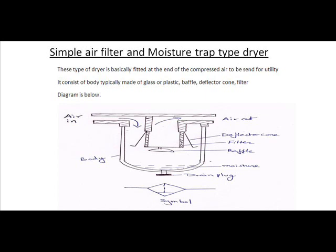Secondly, baffle deflector cone and filter. This kind of dryer acts as an air filter as well as a moisture trap. It does both things, as we see in the diagram below.